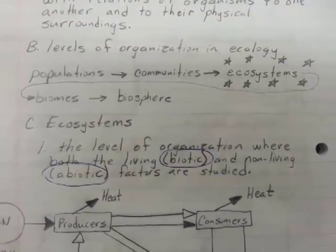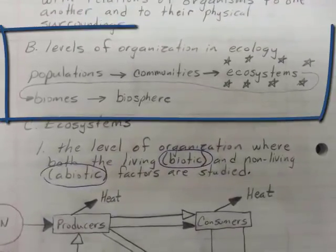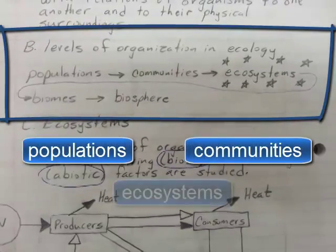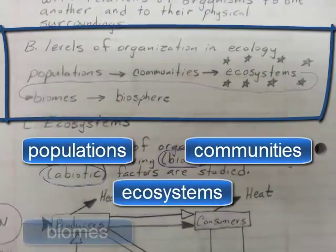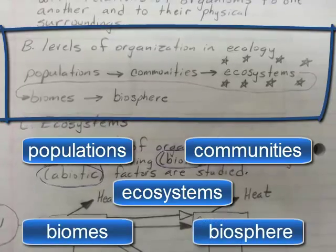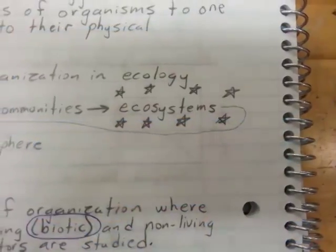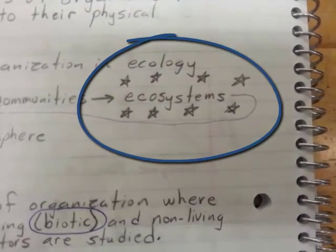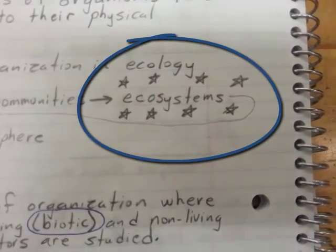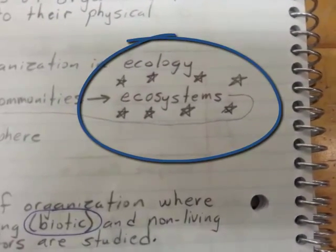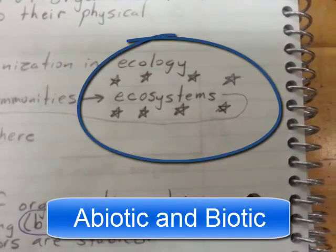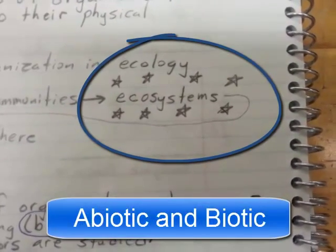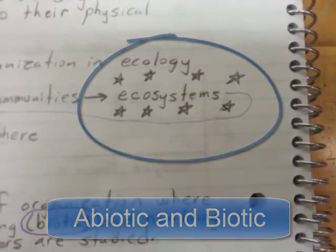In ecology, we look at the higher levels of organization in biology like populations, communities, ecosystems, biomes, and the entire biosphere. The level of organization ecosystems is particularly important in ecology because it is the first level of organization that looks at both nonliving and living factors and how they interact with one another.